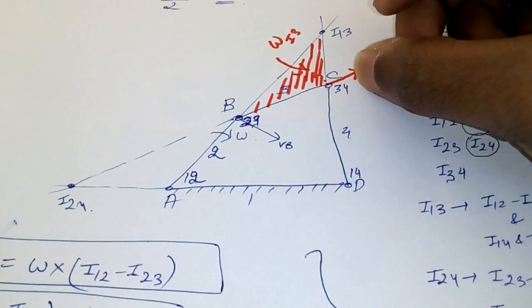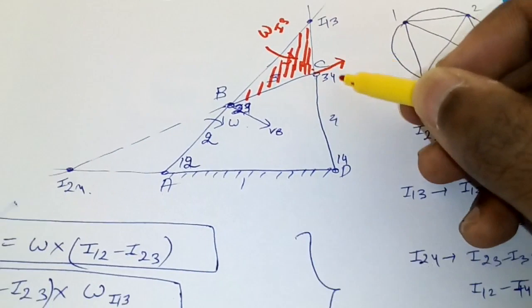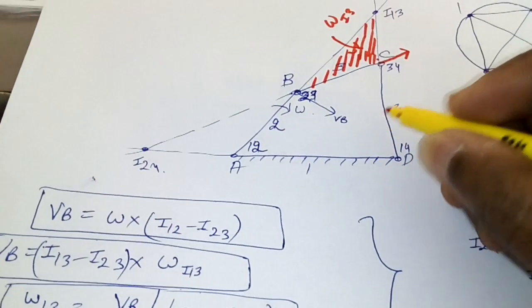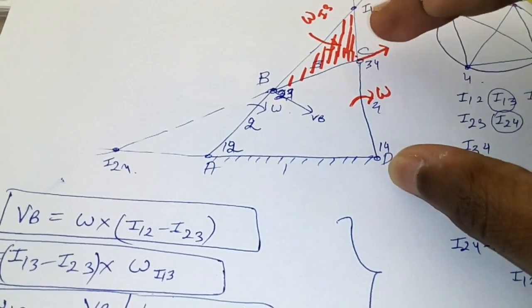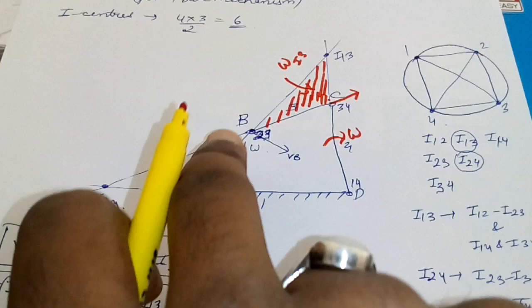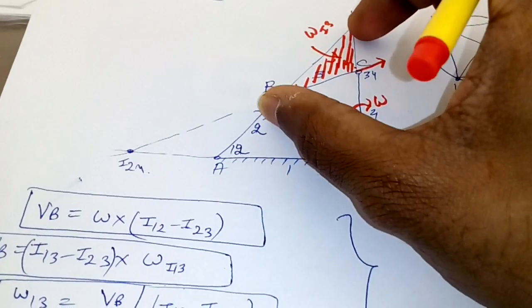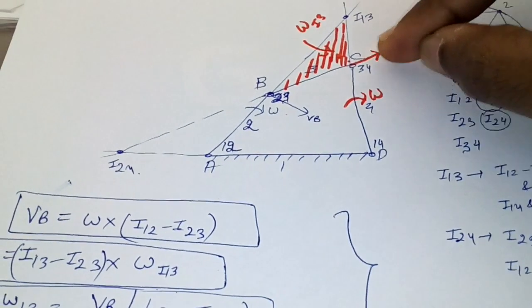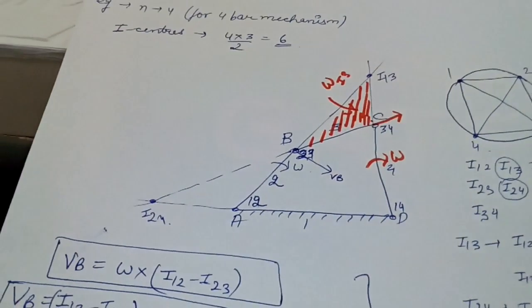So, Vc = ω13 × (I13 to I34). Once Vc is found, you can also find the angular velocity of the output link by dividing Vc by the distance I14 to I34. The process is: find Vb → find ω13 → multiply by distance to get Vc → divide by output link distance to get its omega.